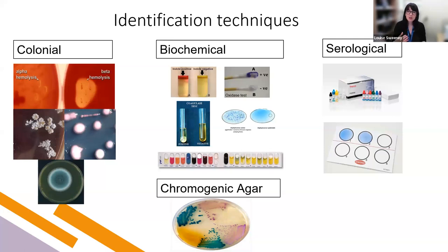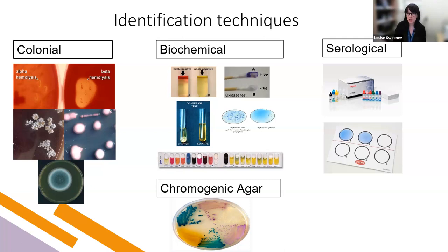For a long time there were some really nice kits — the API kits, API standing for Analytical Profile Index — that allowed you to do a whole host of biochemical tests very quickly in one go and provide an idea of the organism to species level. The little strip contains different types of dehydrated media with chemically defined compositions. You add your solution containing the test isolate and look for colour-mediated reactions, which produce a score you can submit to a database or look up in a book to identify the organism. This is a quite rapid, nice test to do if you have access to this equipment.